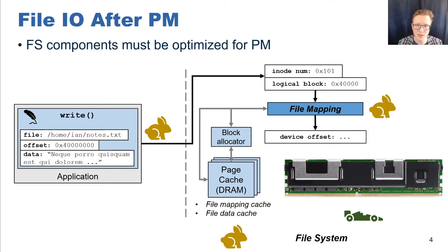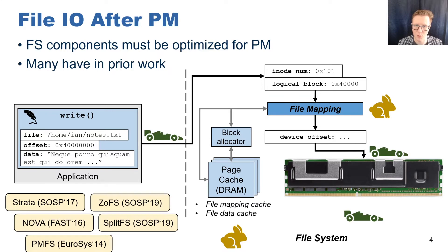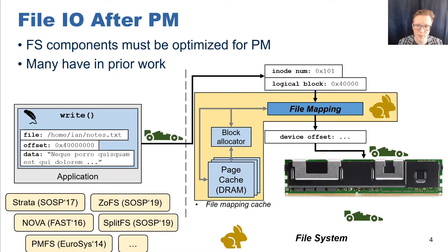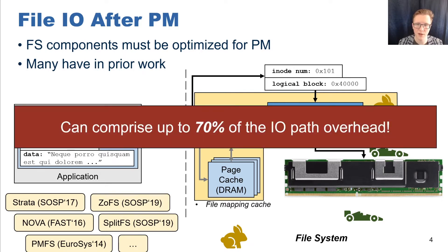It is clear that these parts of the file system must be tailored to accommodate the unique properties of persistent memory. Many components have been analyzed and optimized in prior research — for example, writing file data directly to persistent memory using memory store instructions, and reducing system call overhead by running parts of the file system in user space. However, we discovered that one component has not been rigorously examined: the file mapping structures, which perform the mapping from logical file offsets to physical device locations. No existing file systems bypass the page cache for file mapping information, and many use legacy block allocator designs. These legacy structures contribute to overhead, which can no longer be ignored, as file mapping operations can comprise up to 70% of the IO path even in state-of-the-art persistent memory file systems.